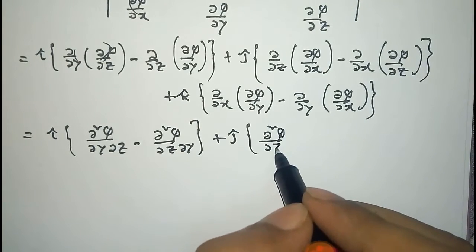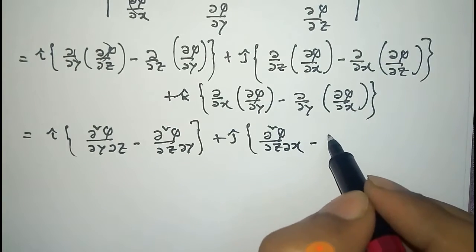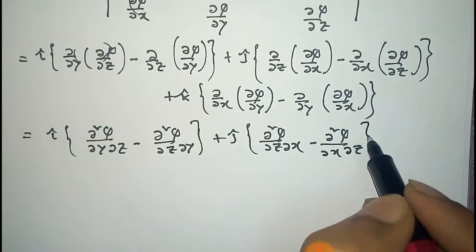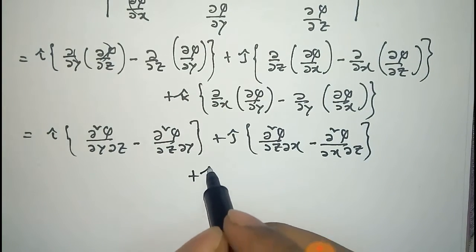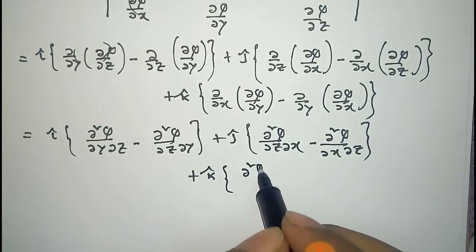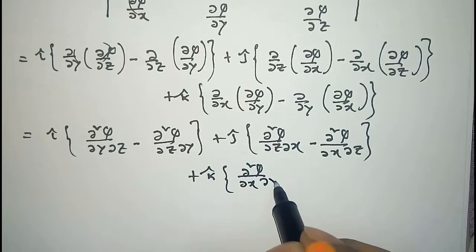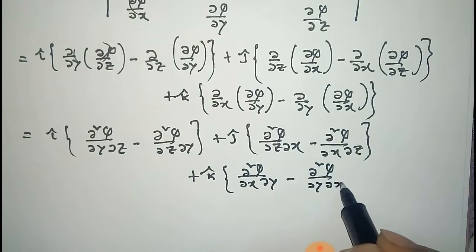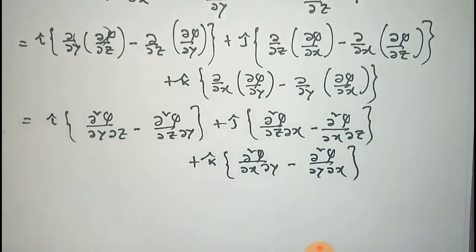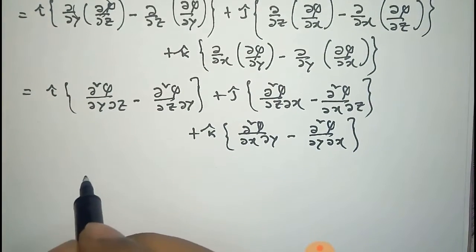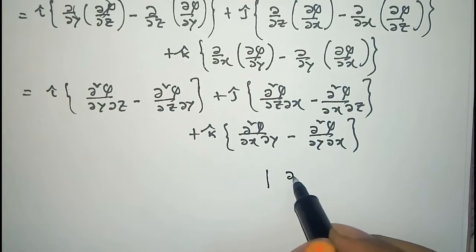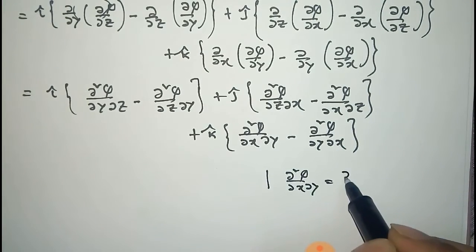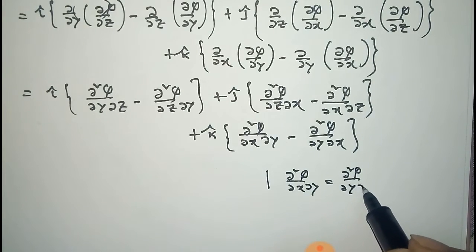Similarly, the j-cap term can be written as del²phi/del z del x minus del²phi/del x del z, and the k-cap term as del²phi/del x del y minus del²phi/del y del x. Now we assume that phi has continuous second partial derivatives, so we can say that del²phi/del x del y equals del²phi/del y del x.